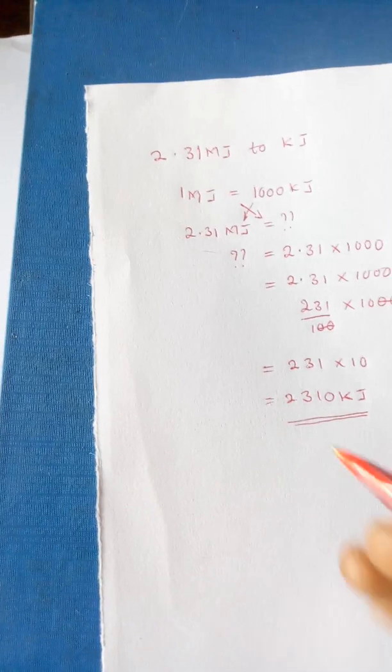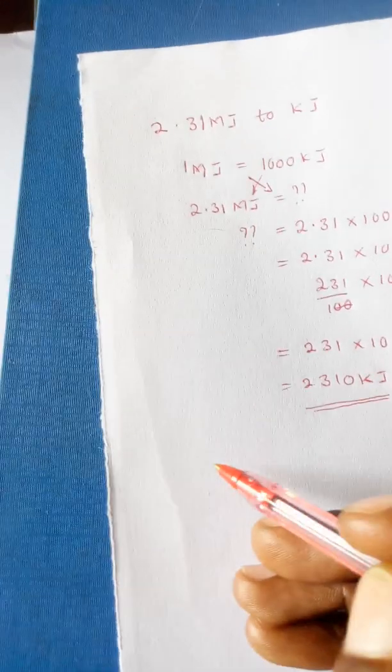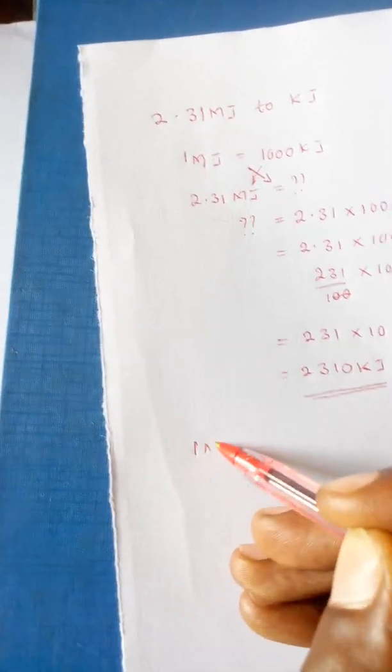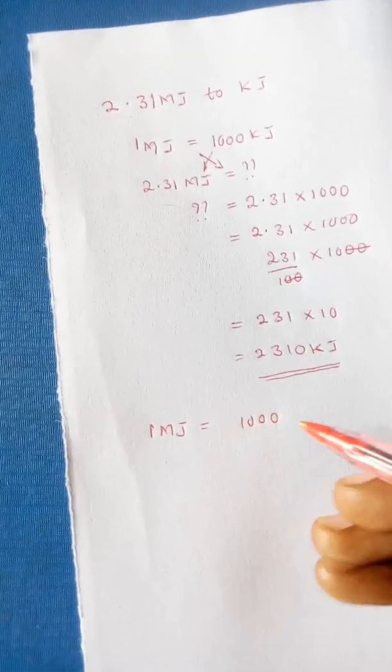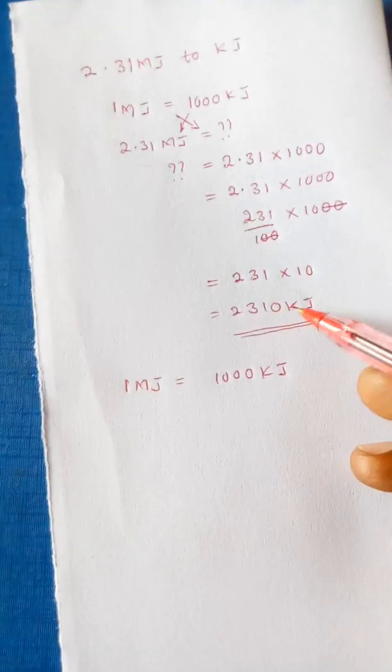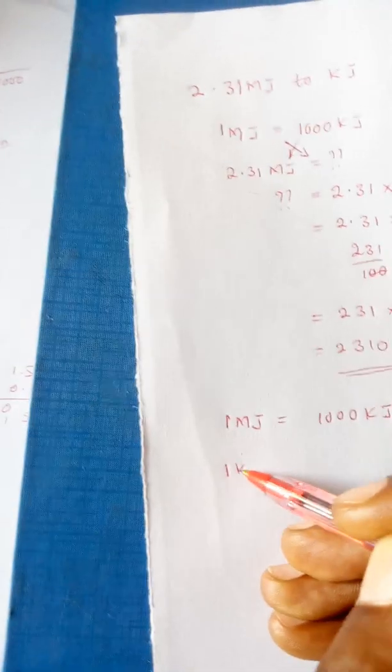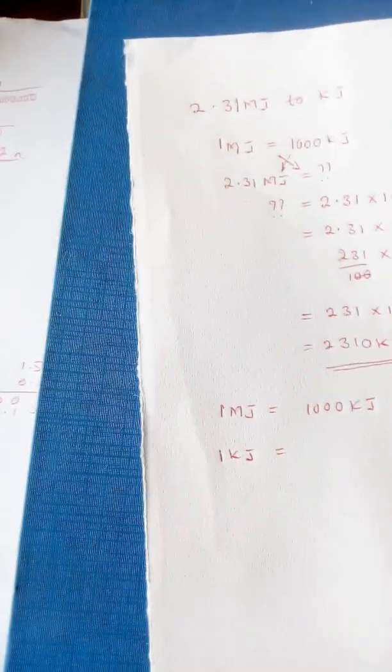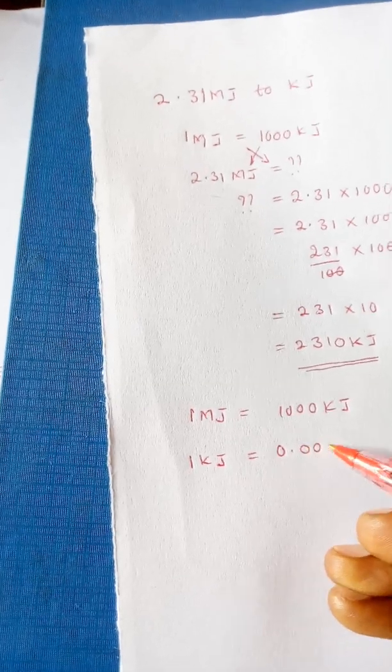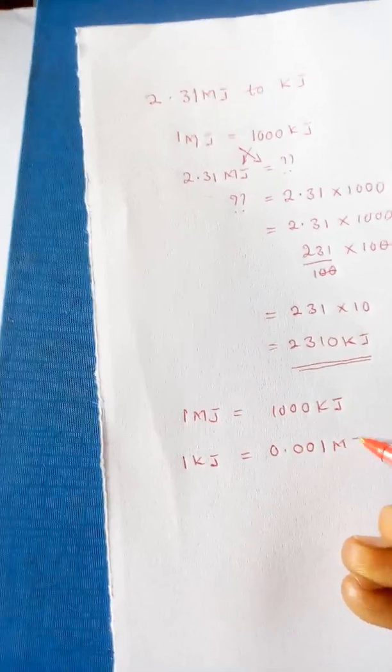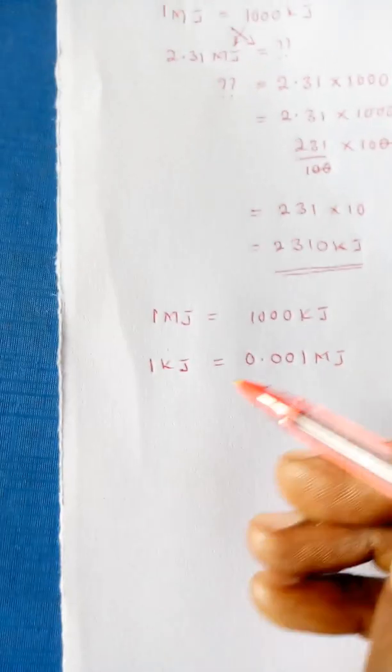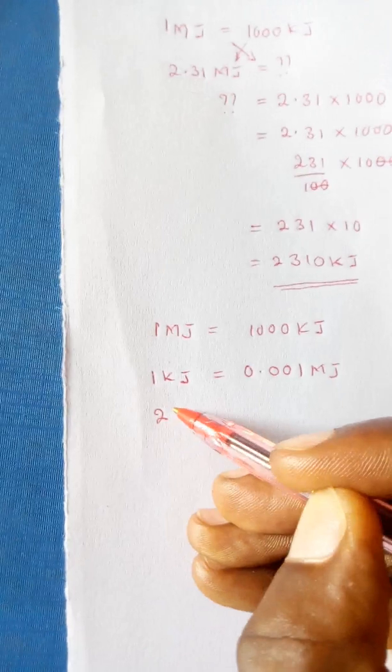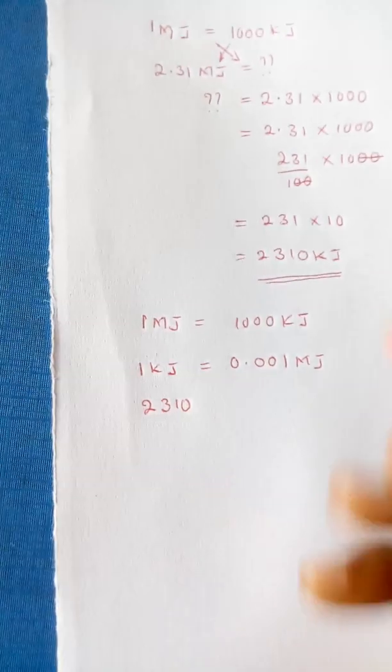For you to convert this into kilojoules. In the same way, we can prove this to be true by saying since 1 megajoule is equal to 1000 kilojoules, now we convert this back to the other one. So we shall say that 1 kilojoule therefore will be equal to 0.001 megajoules.